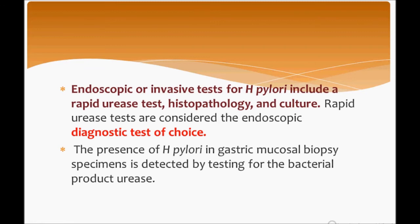Endoscopic or invasive tests for H. pylori include the rapid urease test, histopathology, and cultures. The rapid urease test is considered the endoscopic diagnostic test of choice. The presence of H. pylori in the gastric mucosal biopsy specimen is detected by testing the bacterial product urease.